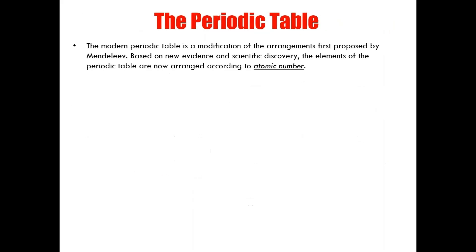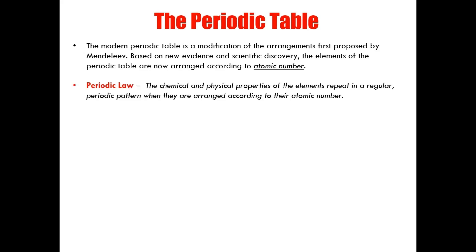The modern periodic table is a modification of the arrangements first proposed by Mendeleev. Based on new evidence and scientific discovery, the elements on the periodic table are now arranged according to atomic number. Scientists have developed a rule that formally recognizes the repeating patterns Mendeleev began to outline in his work. They call it periodic law. The law states that the chemical and physical properties of the elements repeat in a regular, periodic pattern when they are arranged according to their atomic number.